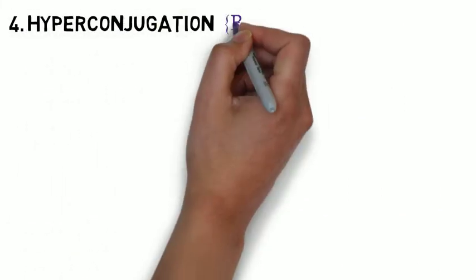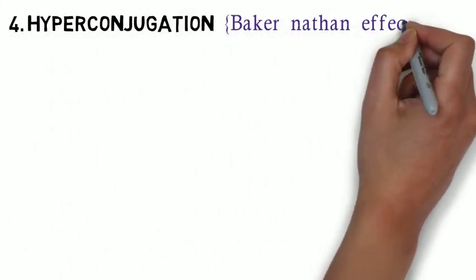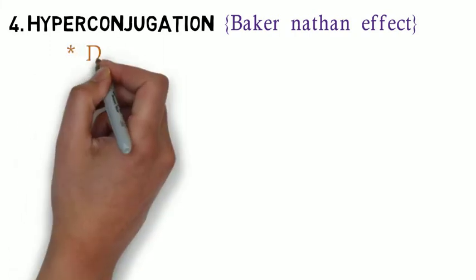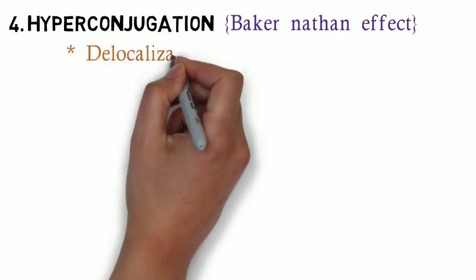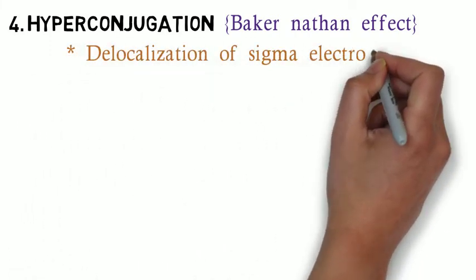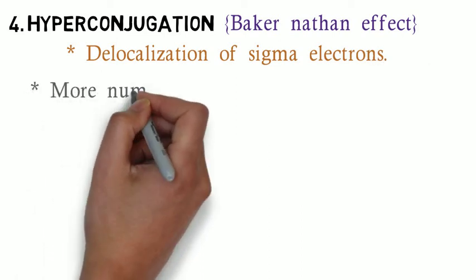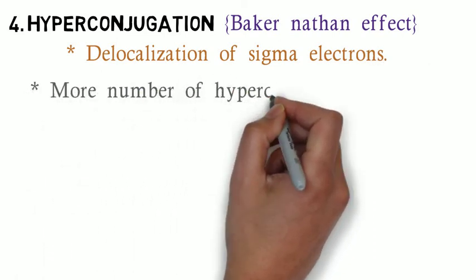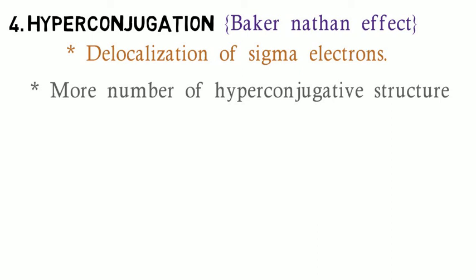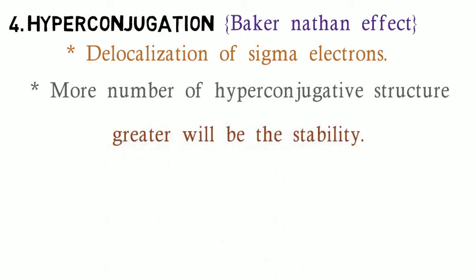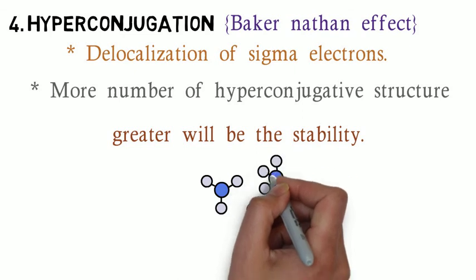The last one is hyperconjugation, otherwise known as the Baker-Nathan effect. It is the delocalization of sigma electrons. The more number of hyperconjugative structures, the greater will be the stability of the compound.